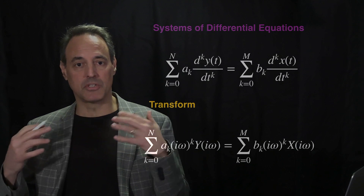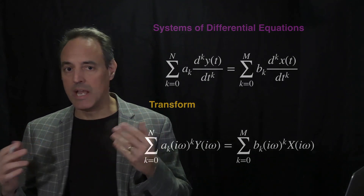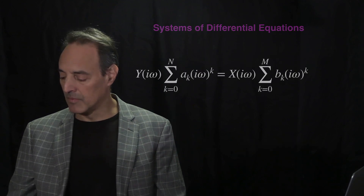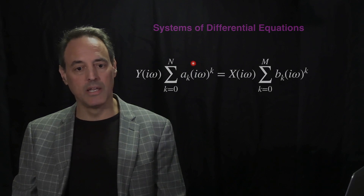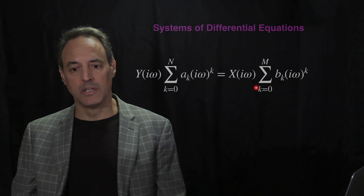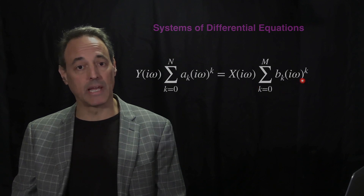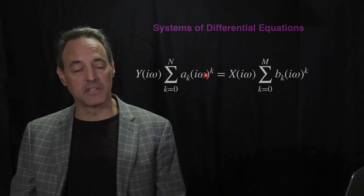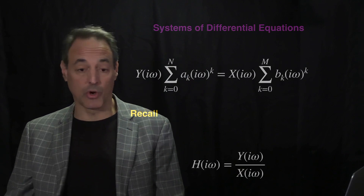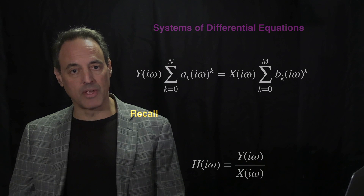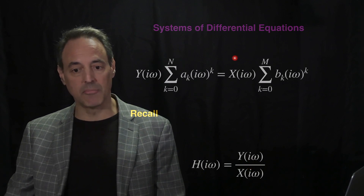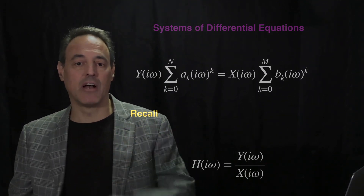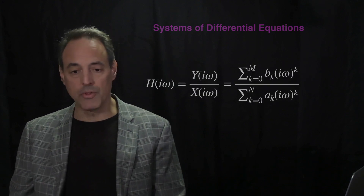The Fourier transforms of X and Y factor out, leaving the sums acting only on the a_k times (iω)^k terms. So we have Y-hat times the sum of a_k (iω)^k equals X-hat times the sum of b_k (iω)^k. Dividing both sides by X and by the polynomial in iω on the Y side immediately gives us a relationship for H in the Fourier domain in terms of the a_k's, b_k's, and powers of iω.